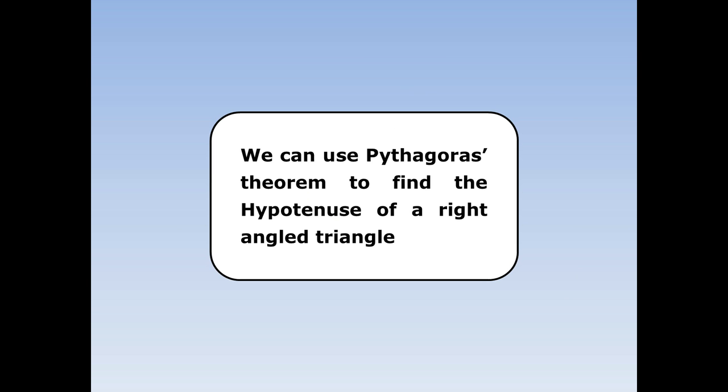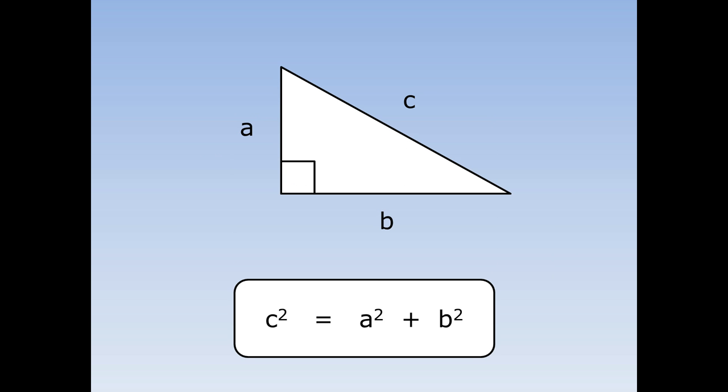We can use Pythagoras' theorem to find the hypotenuse of a right-angled triangle. If we have a right-angled triangle, a and b are the shorter sides, c is the hypotenuse or the longer side. Pythagoras' theorem says c squared equals a squared plus b squared.